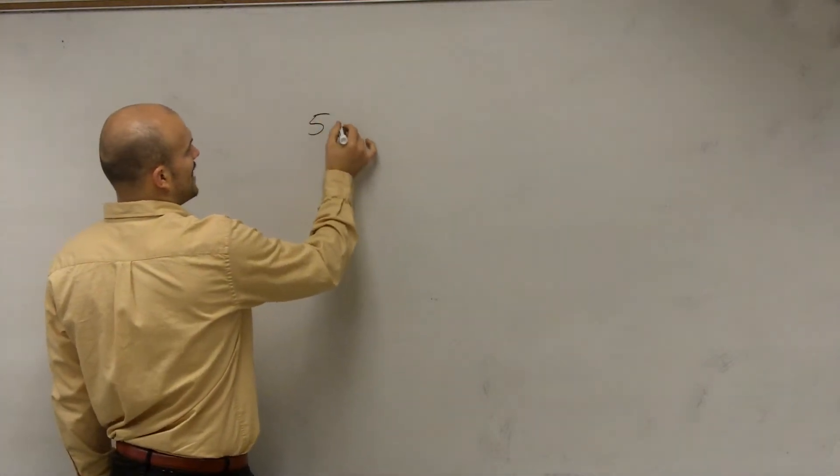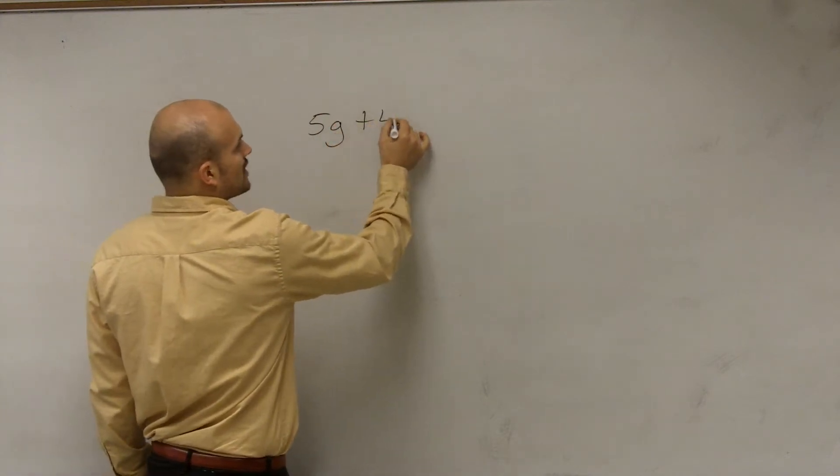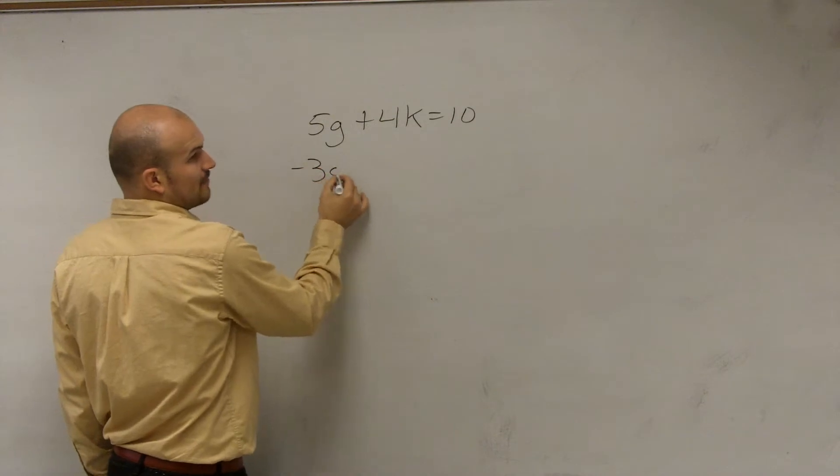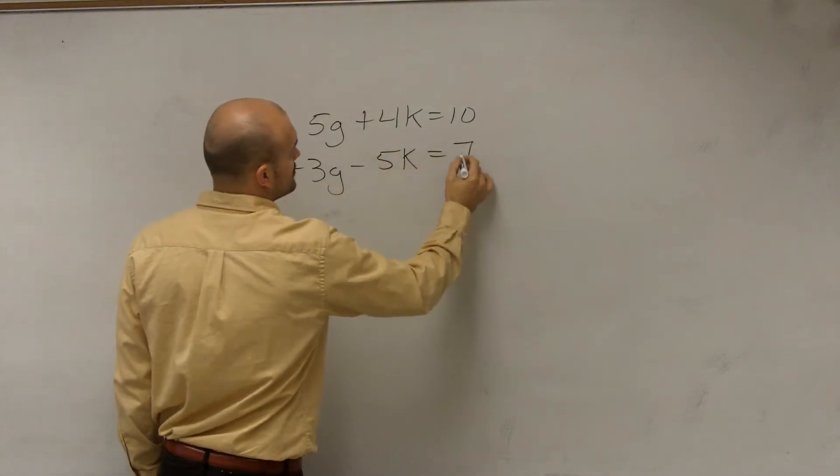So remember we have the equation 5g plus 4k equals 10, and then we have negative 3g minus 5k equals 7.